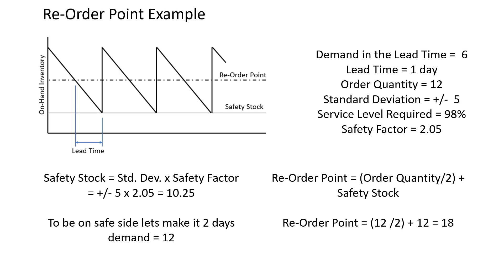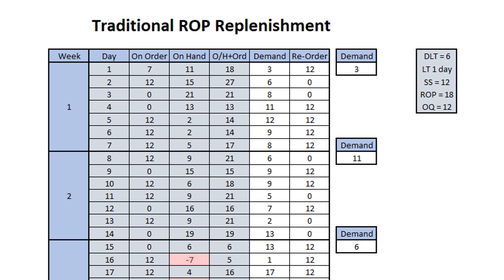Therefore, the reorder point will be calculated as half the order quantity of 12 — which is 6 — plus the safety stock of 12, giving us a reorder point of 18. So every time our on-hand balance plus on-order drops to 18 or less, we will order 12 units for replenishment. The safety stock level is 12, the reorder point is 18, the lead time is one day, and the order quantity is 12.